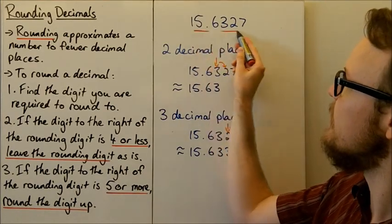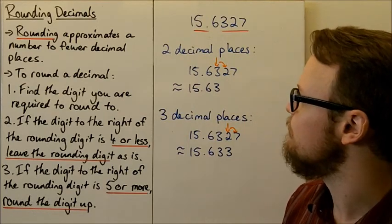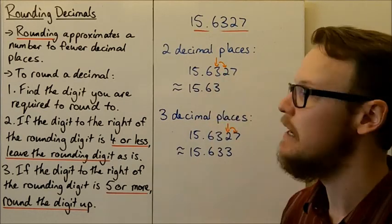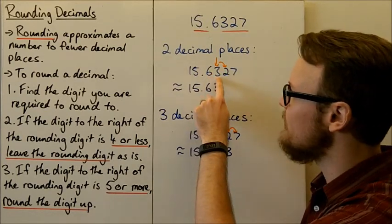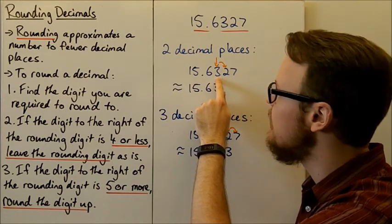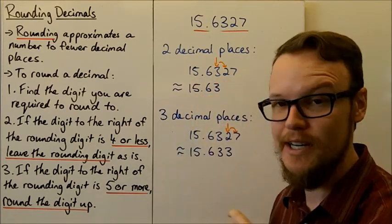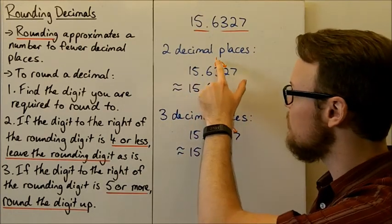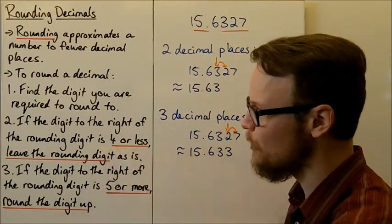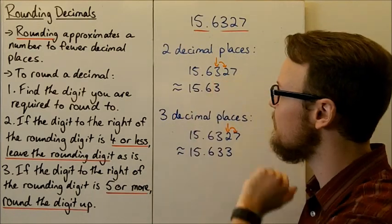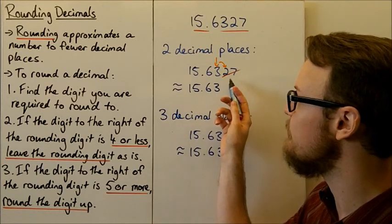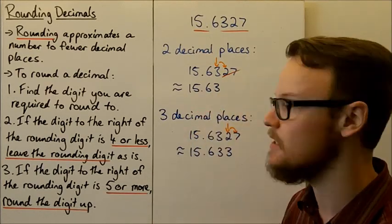So if you've got this number here, 15.6327, and you're asked to round it to two decimal places, put an arrow at the second decimal place — that's the hundredths column. That is the number you need to round to, so look to the digit to the right of it. That digit is 4 or less, so we leave the rounding digit as is and just remove the rest. This number rounded to two decimal places is 15.63.